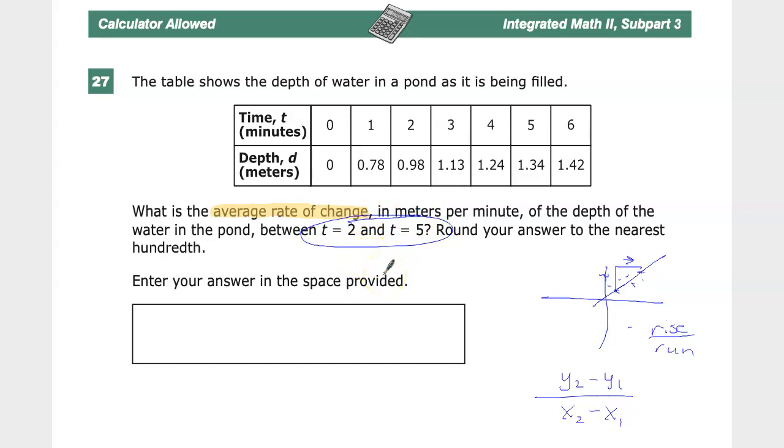So I'm going to make two points at 2 and 5. I have 2 and 0.98, and then I have 5 and 1.34.